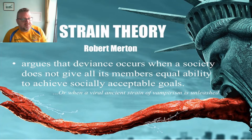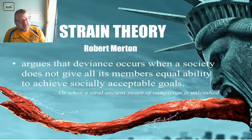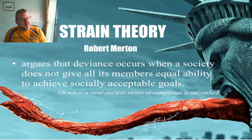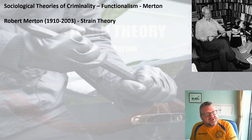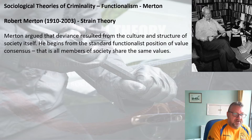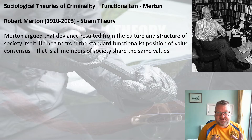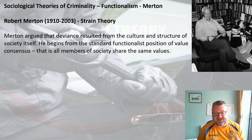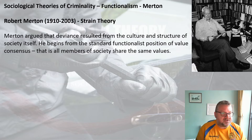That brings us on to another functionalist: Robert Merton. Merton is linked to his theory called strain theory, which argues that deviance occurs when a society doesn't give all its members equal ability to achieve socially acceptable goals. He argues that deviance results from the culture and structure of society itself, starting from a standard functionalist position of value consensus — that all members of society share the same values — and a consensus on what is and isn't the right thing to do.